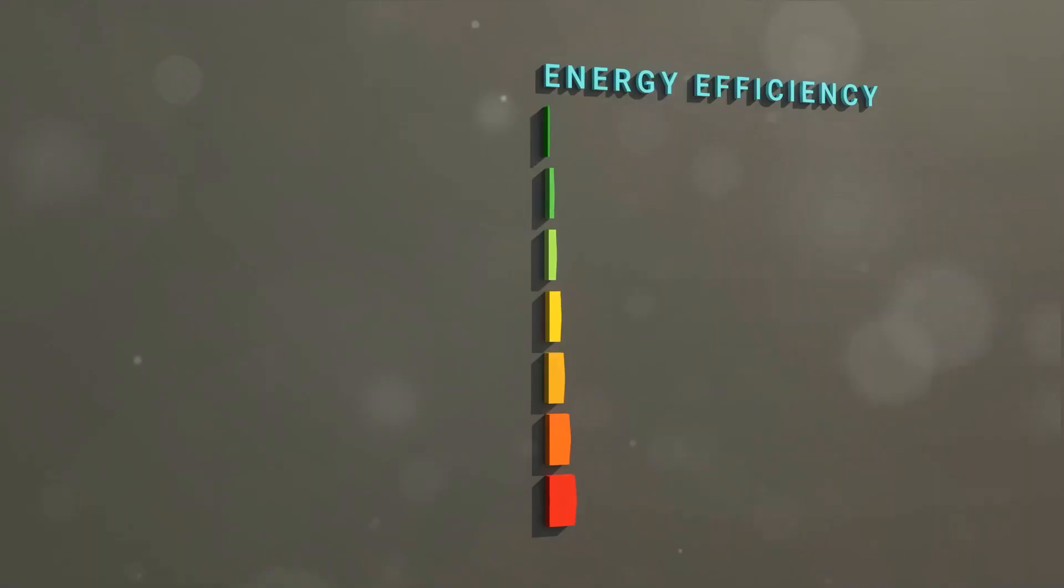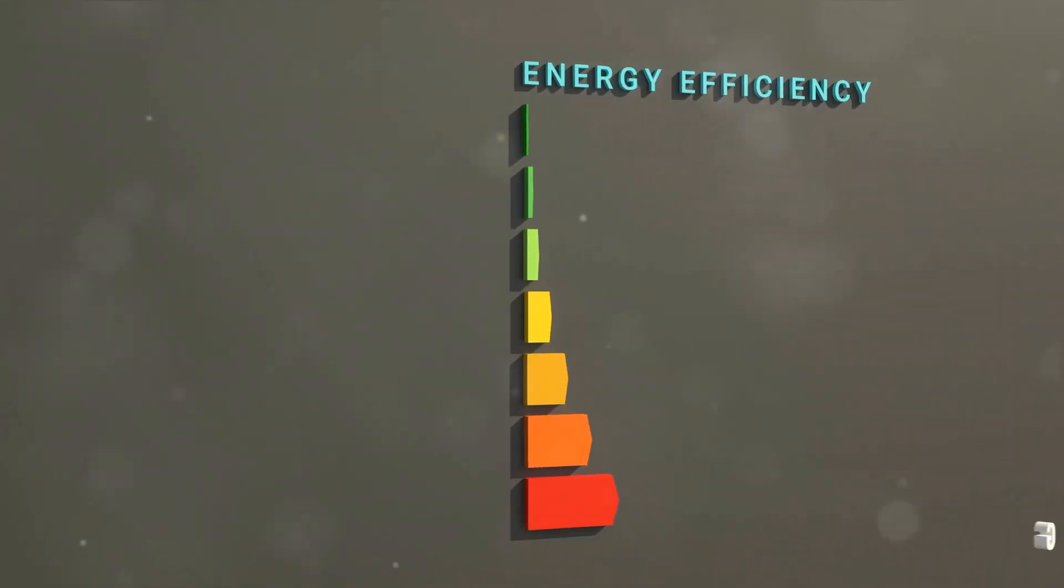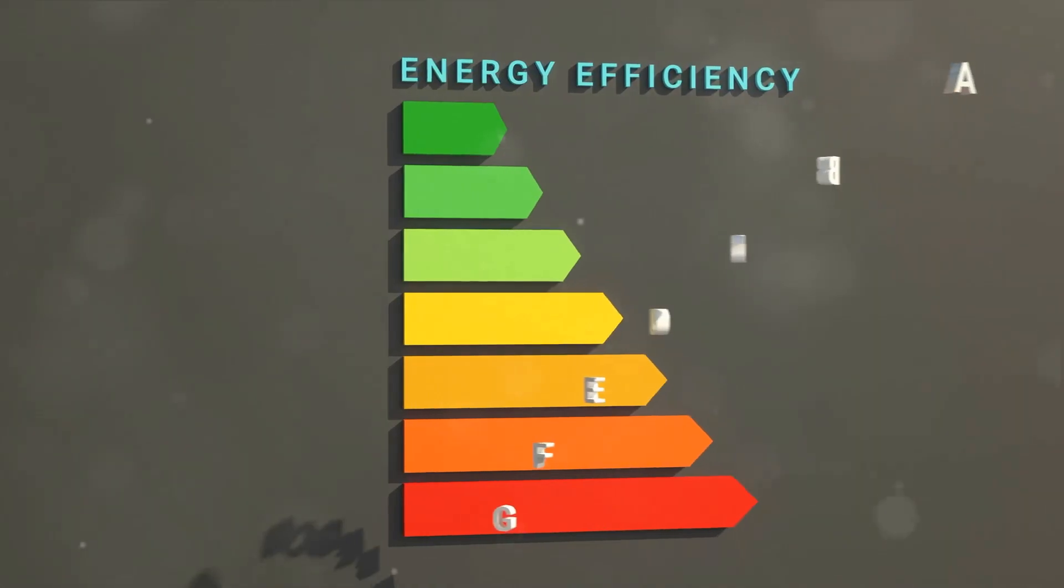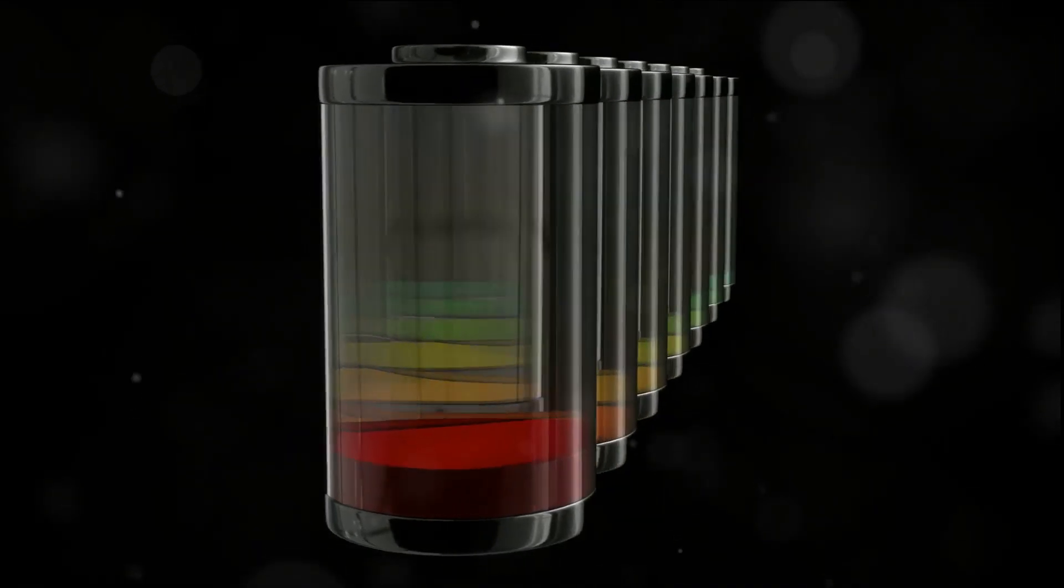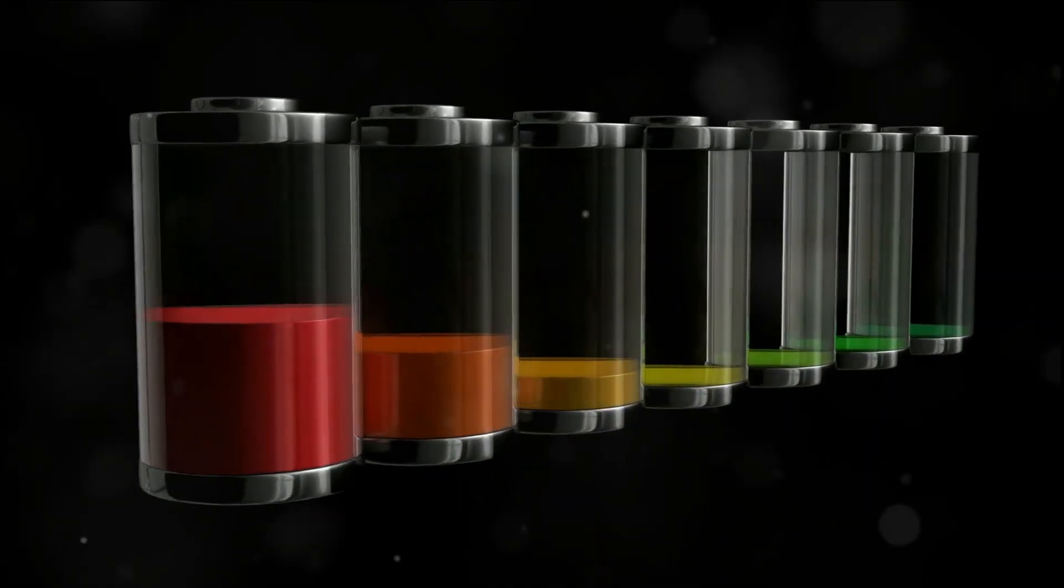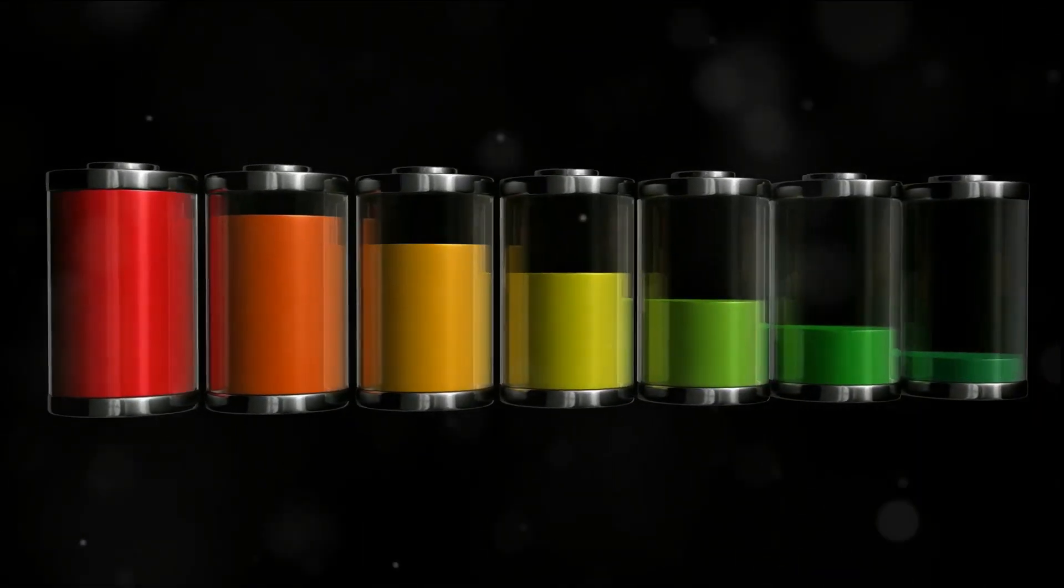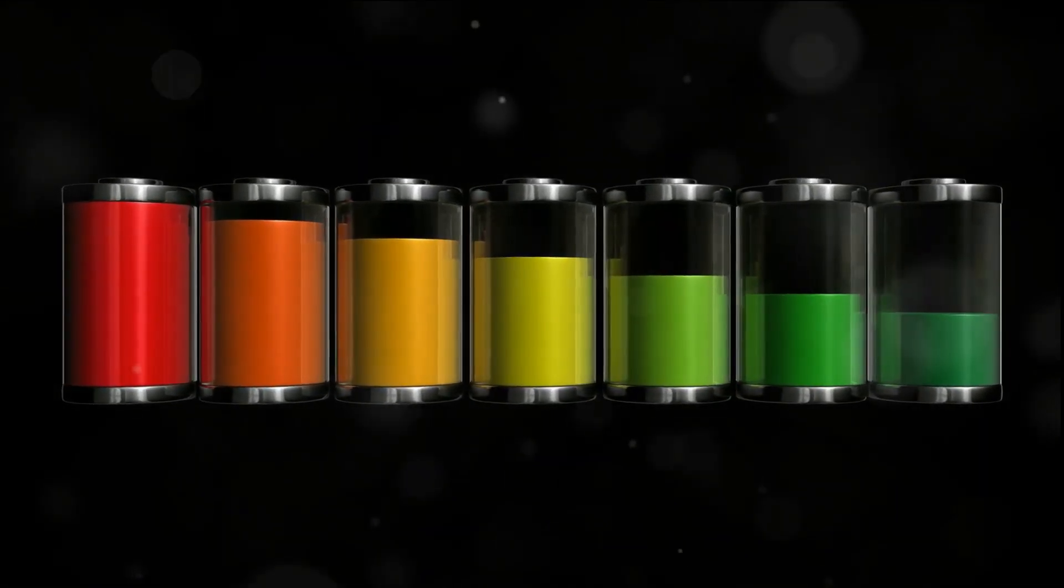The efficiency of our heat engine, then, is a reflection of these entropy changes. The greater the temperature difference between the hot and cold reservoirs, the more heat energy can be converted into work. But no matter how efficient our engine is, some energy will always be lost as waste heat, thanks to entropy.